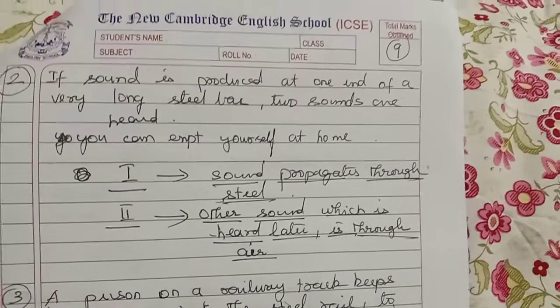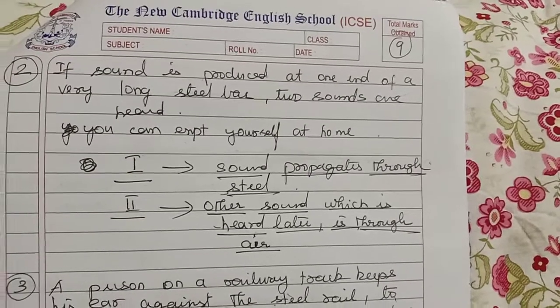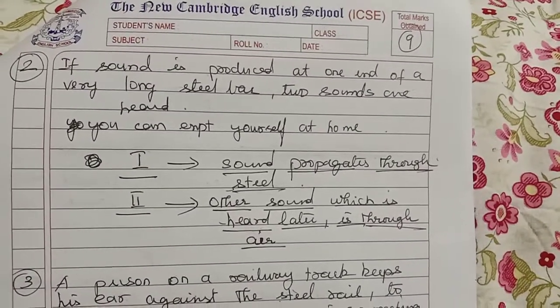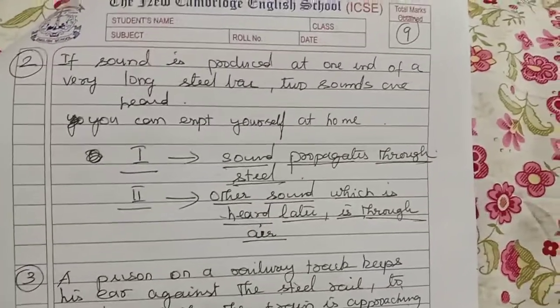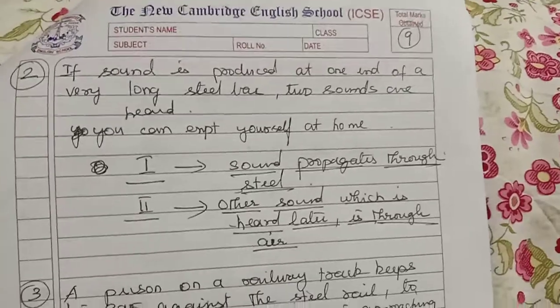One more example: if sound is produced at one end of a very long steel bar, two sounds are heard. You can experiment yourself at home. Why two sounds are heard? Because first the sound will propagate through steel, and next it will propagate through air.